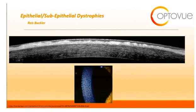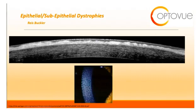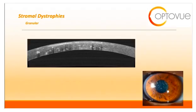The next dystrophy in this category is Reese Buckler. Clinically, Reese Buckler appears as subepithelial gray reticular opacities in the corneal subepithelial or epithelial space — it resembles the appearance of Chex cereal. On OCT, you can see a dense, hyper-reflective material at the level of Bowman's that can spread up to the epithelium.